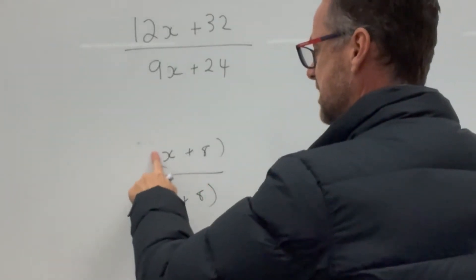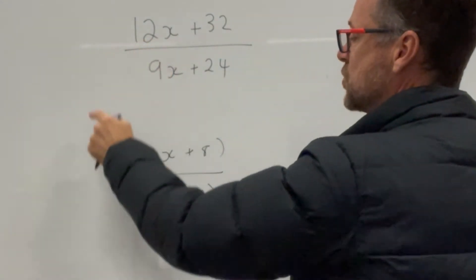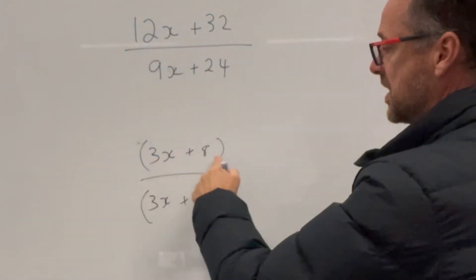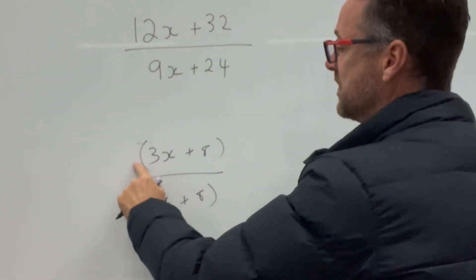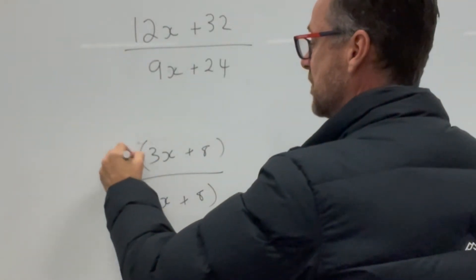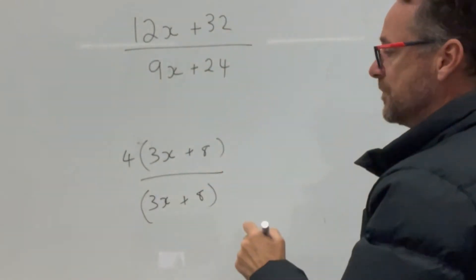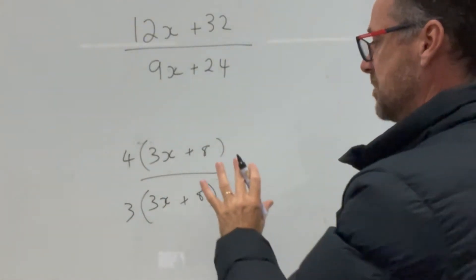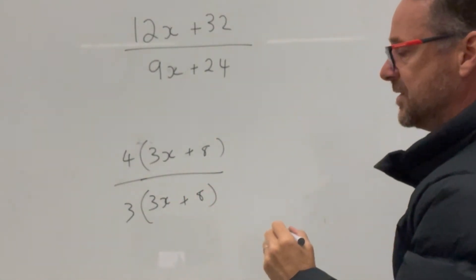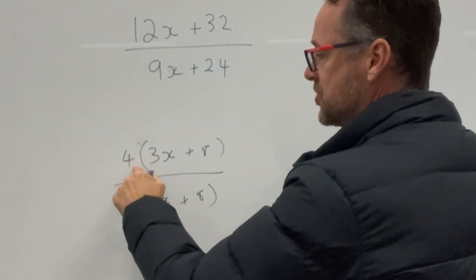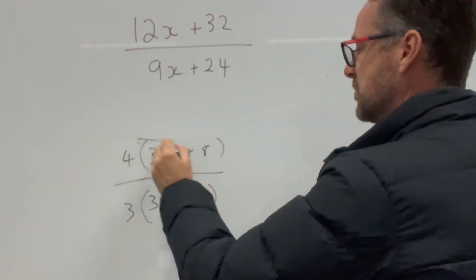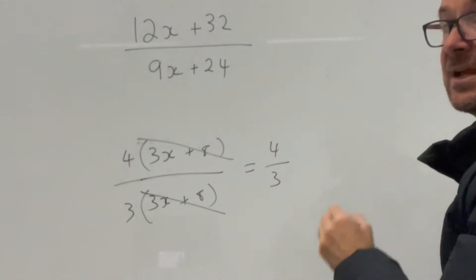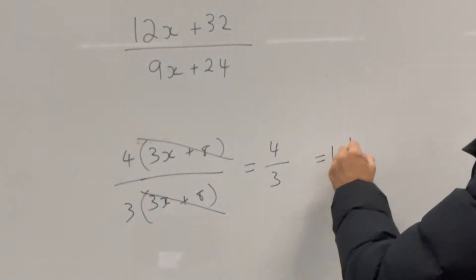We have a problem though — we can't put 12 and 9 out the front directly. We can see that 3 is also common to both, so now we're at 3x plus 8 over 3x plus 8. One more step before we finish factorising: 4 times 3x gives 12x and 4 times 8 gives 32; 3 times 3x gives 12x and 3 times 8 gives 24. Now we've got factorised top and bottom, and we can cancel (3x + 8) with (3x + 8), leaving us 4 over 3.